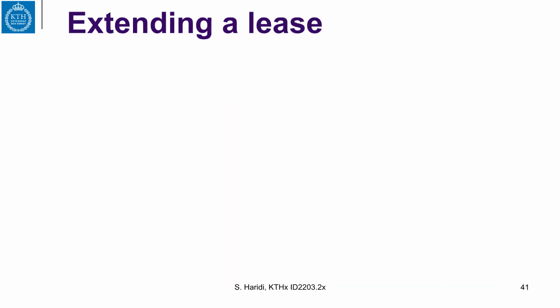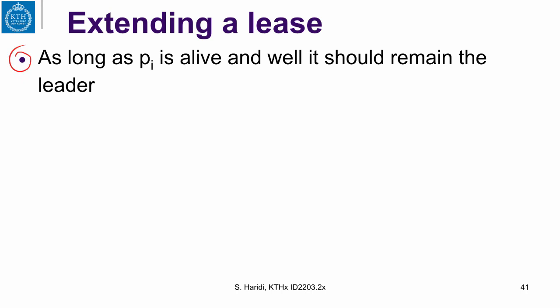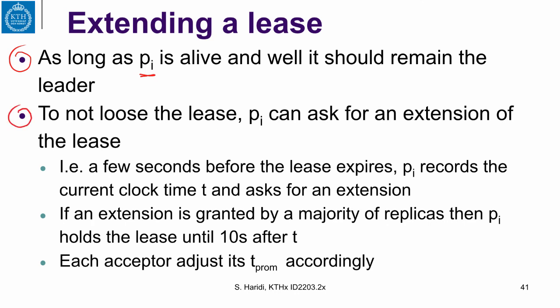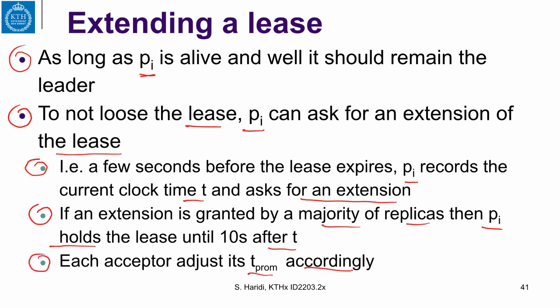One more aspect: lease extension. As long as PI, the leader, is alive and well, it should remain the leader. To avoid losing the lease, PI should request an extension — for example, a few seconds before expiry, P1 records the current clock time T and asks for an extension. If the extension is granted by a majority of replicas, P1 holds the lease for 10 more seconds after T, again accounting for drift as just described. Each acceptor adjusts its T_promise accordingly. With this, we conclude the lease-based leader election algorithm.